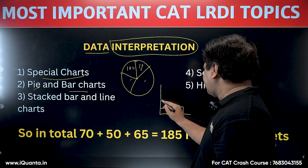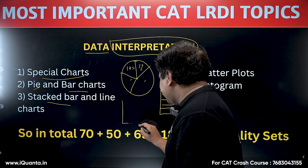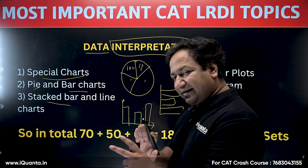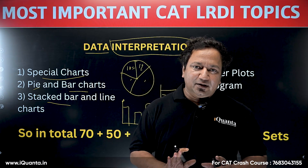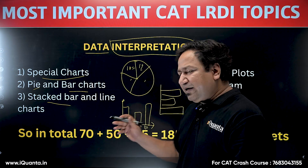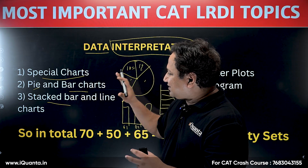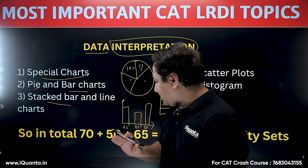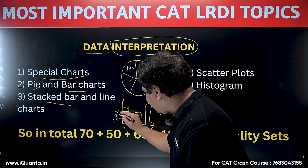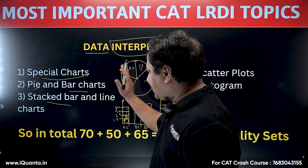Bar charts can be vertical or horizontal; vertical bars are called column graphs. Stacked bar charts represent multiple data series in one bar — for example, production of four companies across three years (2001, 2002, 2003) shown in a single bar divided into four sections with values like 10, 20, 30, and 50 units. Each division represents incremental values, so the second company would have 20 minus 10 units.